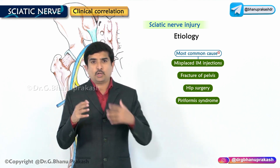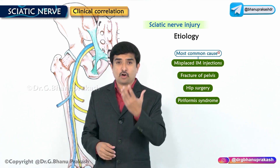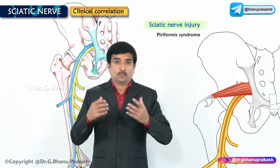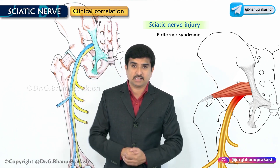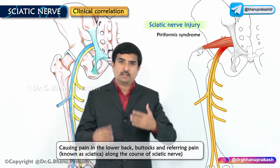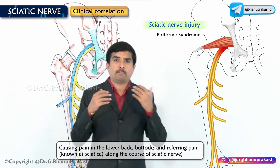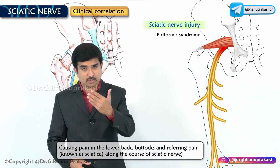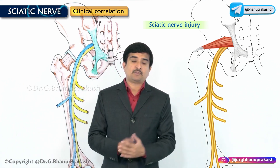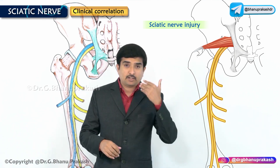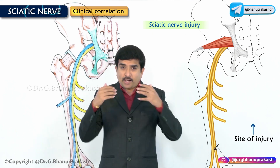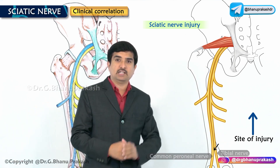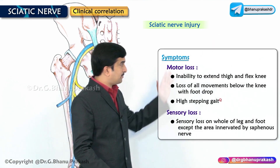Piriformis syndrome is a condition in which the piriformis muscle irritates and causes pressure on the sciatic nerve, causing pain in the lower back and buttocks, and referring pain known as sciatica along the course of the sciatic nerve in the posterior aspect of the thigh. Since the site of injury is before the sciatic nerve divides into its two terminal branches, both tibial and common peroneal nerves are affected.